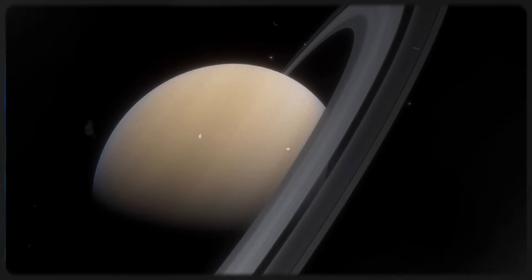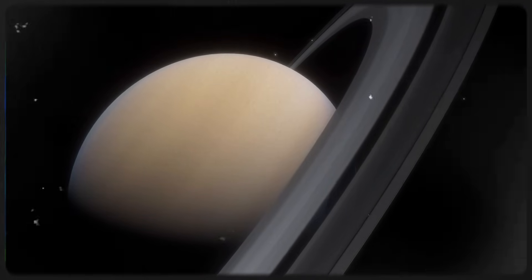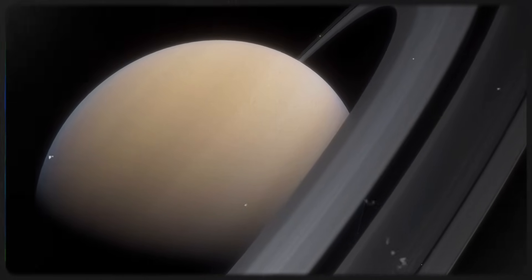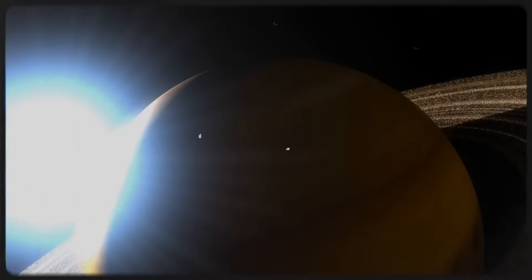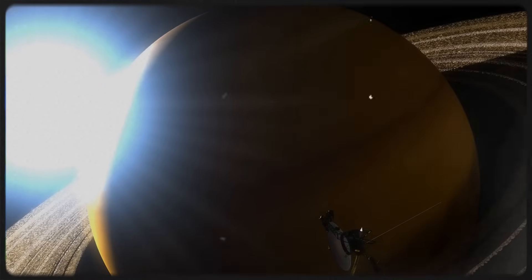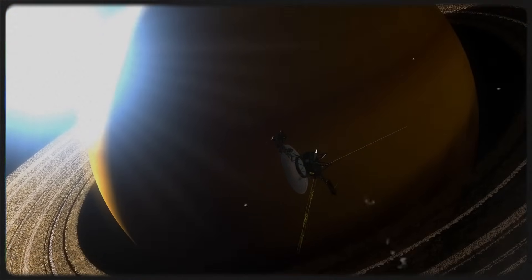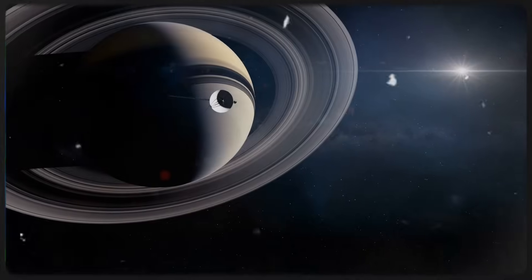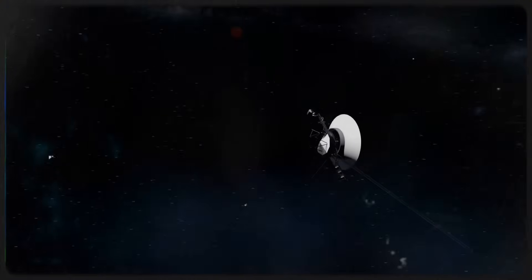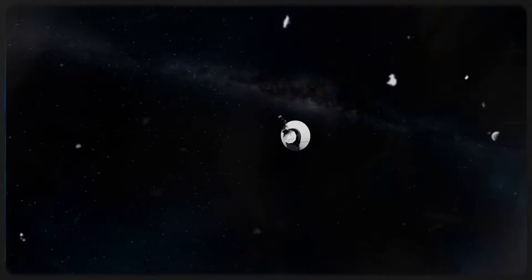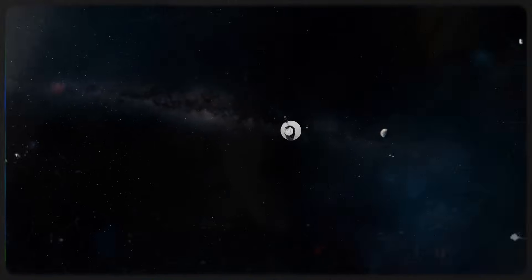Following its Jupiter mission, Voyager 1 continued on to Saturn, making its closest approach in November 1980. The spacecraft captured incredible details of Saturn's rings and newly discovered moons, revealing a faint new ring, the G-ring, and helping scientists understand the structure of Saturn's rings and the gravitational forces that shape them. However, Voyager 1's journey didn't conclude with Saturn. After completing its planetary explorations, it continued on a trajectory that would eventually carry it beyond the solar system.